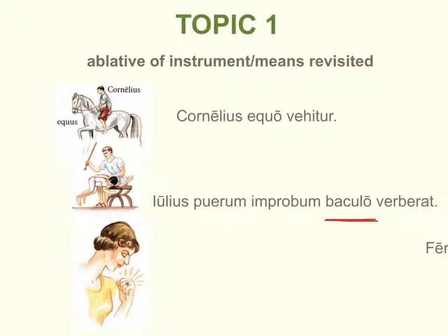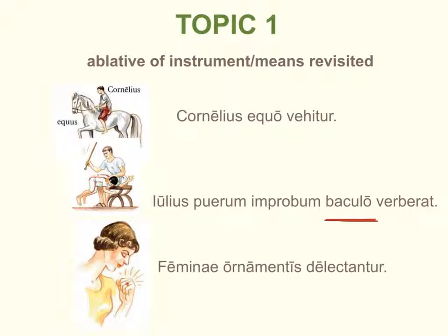In this chapter we are introduced to more uses of the ablative of instrument or means. We have Lydia admiring the new ring on her finger that Medusa bought for her. Feminae delectantur ornamentis — women are delighted by jewelry — using the ablative of instrument or means, the means by which women are delighted.